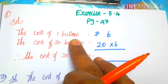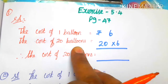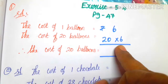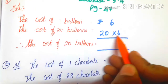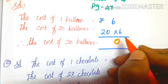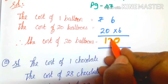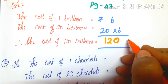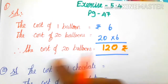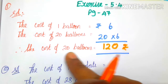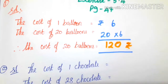The cost of 1 balloon is 6 rupees. The cost of 20 balloons is 20 into 6. So 6 into 0 is 0, next 6 into 2 is 12, so 120 rupees. Therefore the cost of 20 balloons equals 120 rupees.